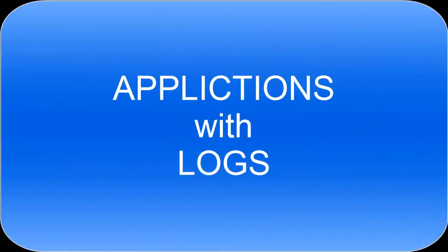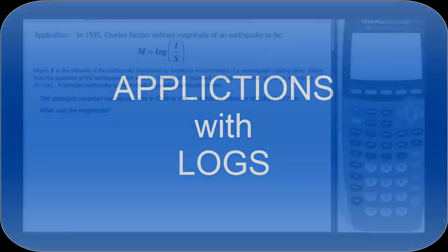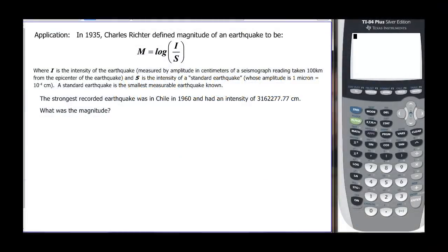This video is going to talk about applications with logs. In 1935, Charles Richter defined the magnitude of an earthquake as m equals log of (i over s), where i is the intensity of the earthquake measured in centimeters from a seismograph reading taken 10 kilometers from the center, and s is the intensity of a standard earthquake whose amplitude is 1 micron, equal to 10 to the negative 4 centimeters. A standard earthquake is the smallest measurable earthquake known.